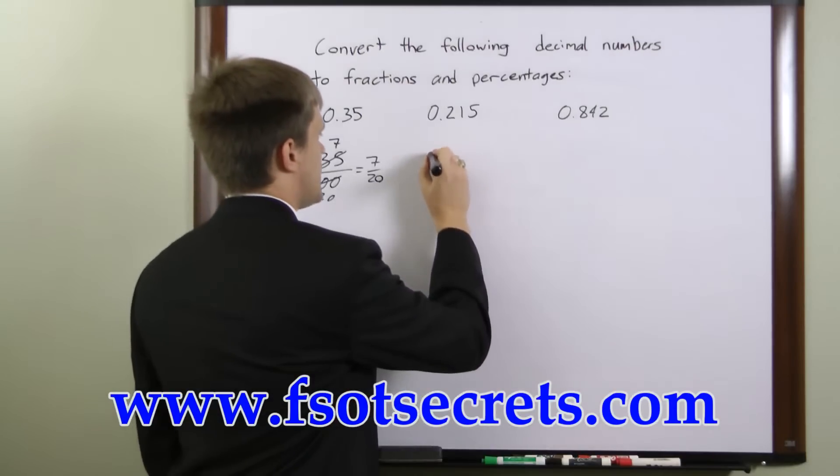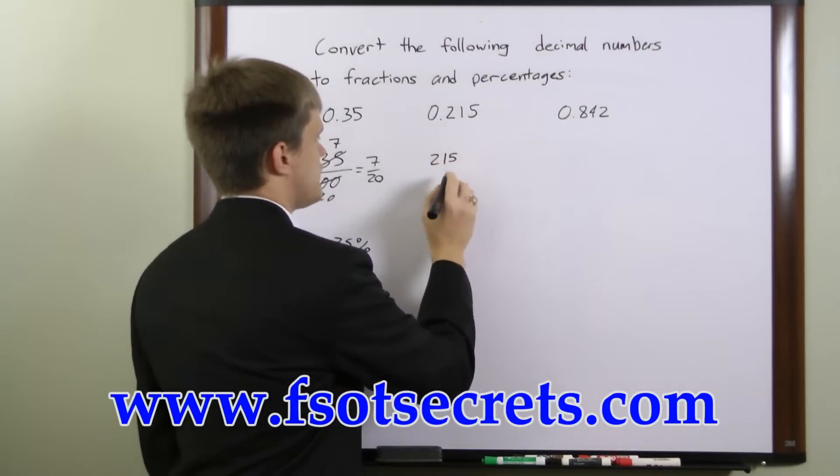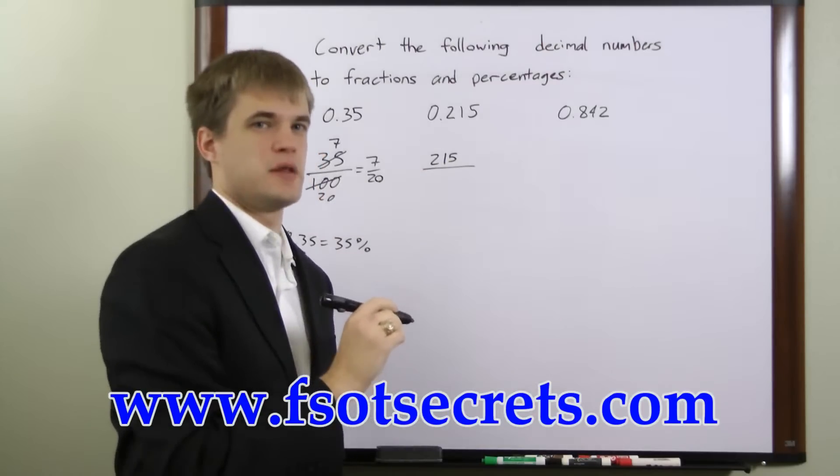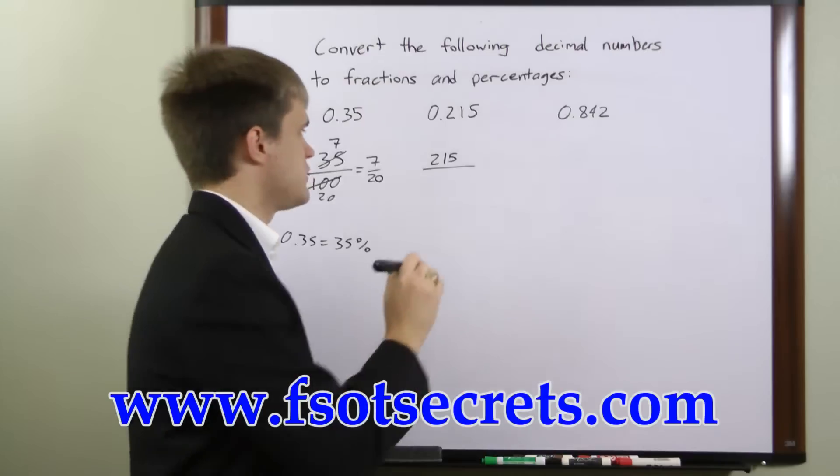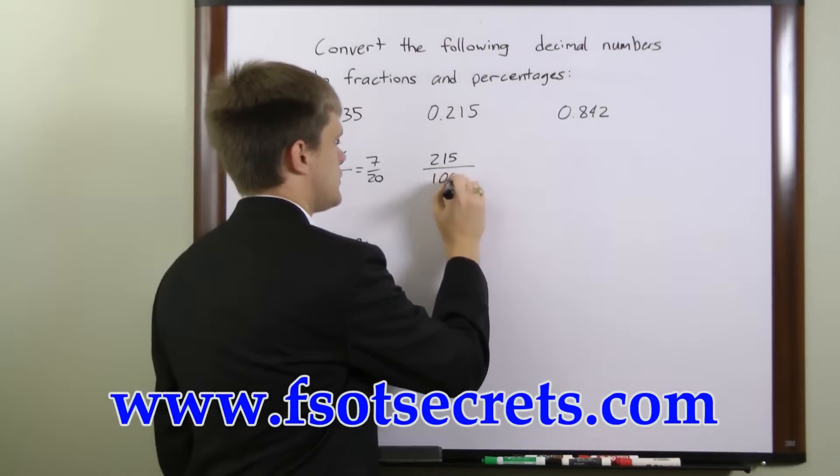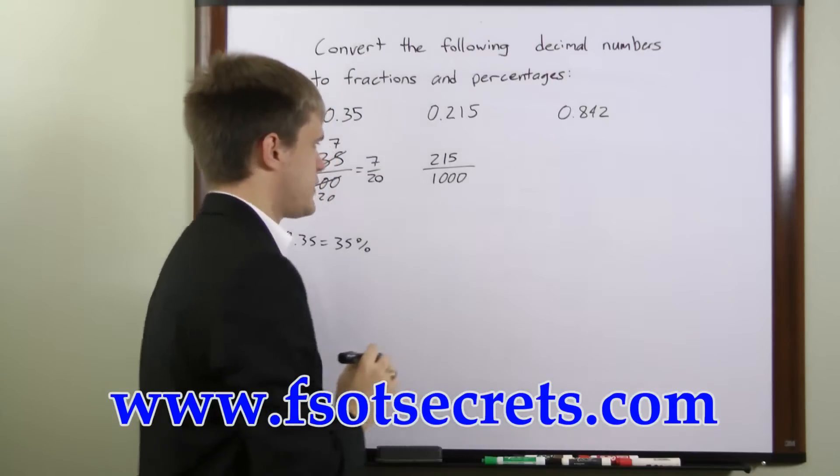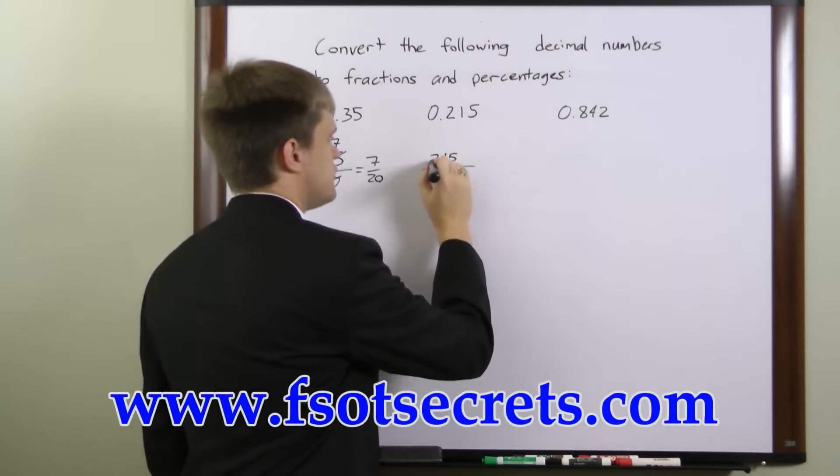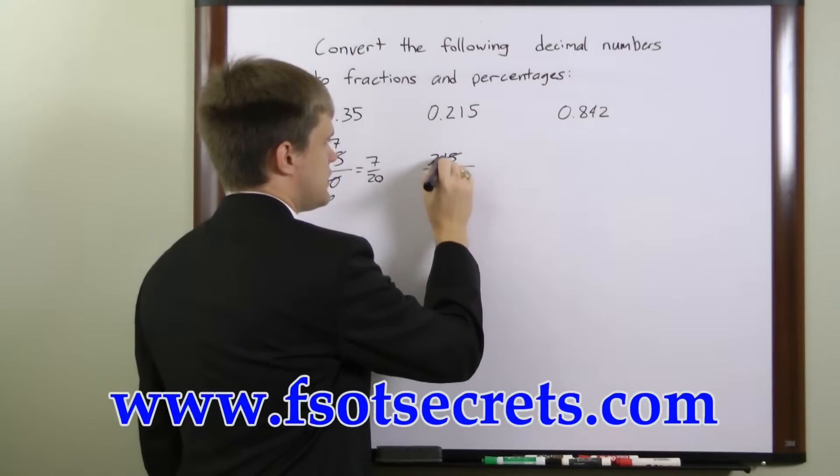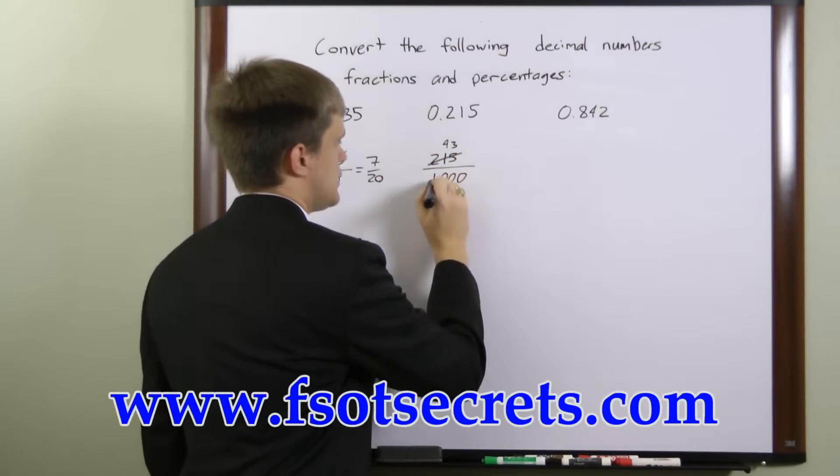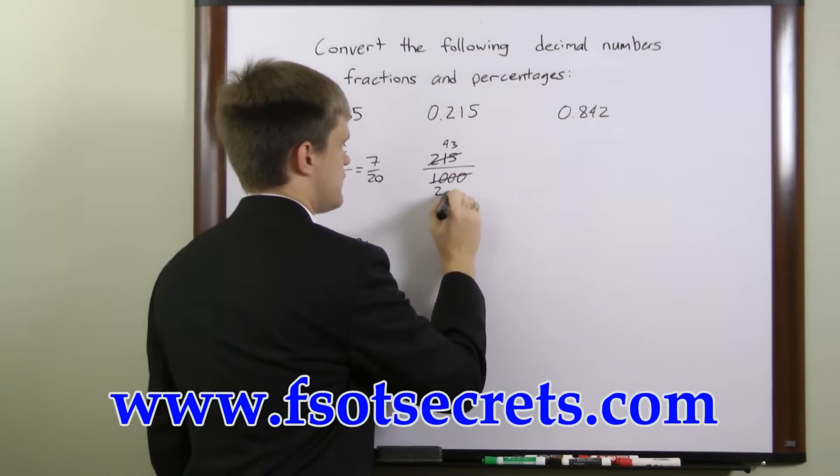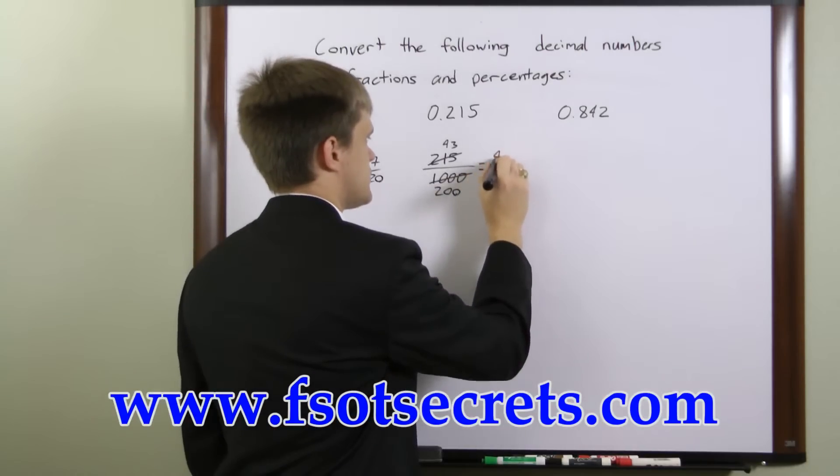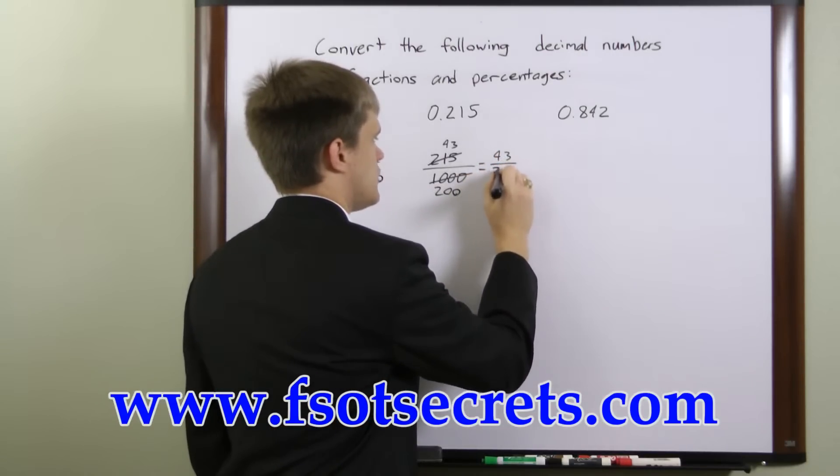Once again we'll write 215 as our numerator. The rightmost digit is 3 places to the right of the decimal, so we will write three zeros in our denominator: 215 over 1,000. We can divide top and bottom by 5, so 215 over 5 is equal to 43 and 1,000 over 5 is equal to 200. So this fraction is the same as 43 over 200.